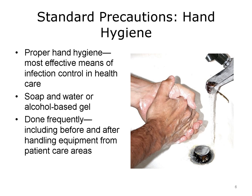The most effective means of controlling infection in the health care setting has been shown to be proper hand hygiene, which equates to frequent hand washing with alcohol-based gel or soap and water. Using the proper techniques ensures that you're cleansing your hands of bacteria and preventing the spread of germs or cross-contamination. Hand hygiene must be performed before and after eating, before and after using the restroom, before and after being in patient care areas, before and after handling equipment from patient care areas — such as computers, medication scanners, and mobile devices — and when returning to your organization after being off-site.